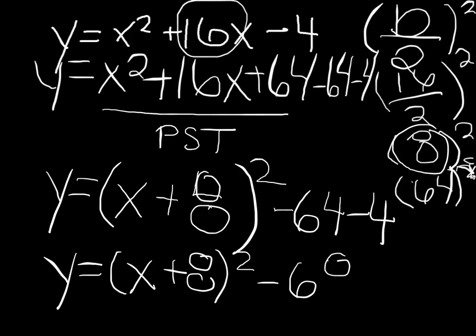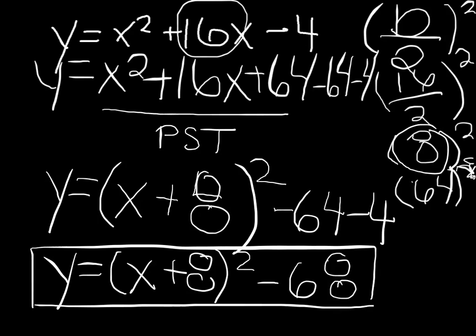And that's negative 68. This is our final answer, and that is how you factor, and that is how you finish a standard form, a quadratic function to a vertex form.